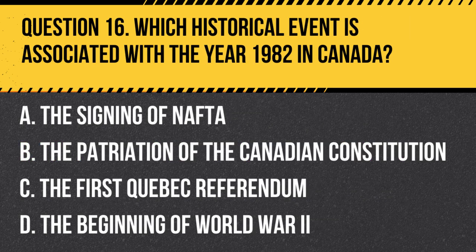Question 16. Which historical event is associated with the year 1982 in Canada? A. The signing of NAFTA. B. The patriation of the Canadian Constitution. C. The first Quebec referendum. D. The beginning of World War II.